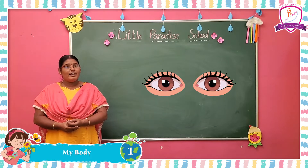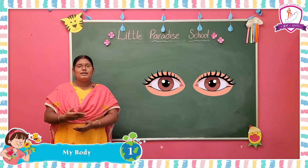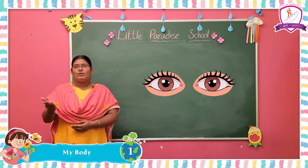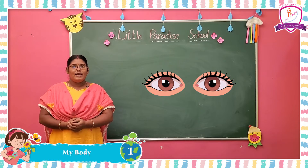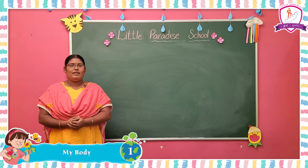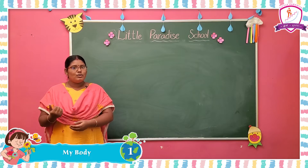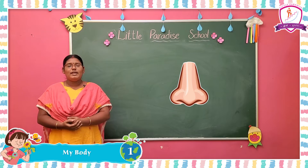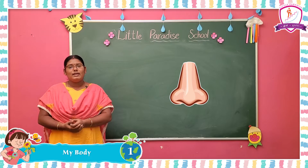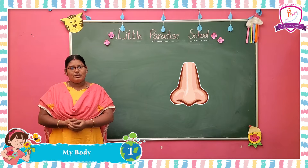What is the use of eyes in our body? Eyes help us to see the things around us. Eyes help us to see. What do you do with your nose? Nose helps us to smell and breathe. We use our nose to smell and to breathe.